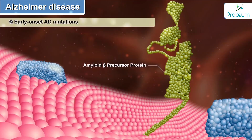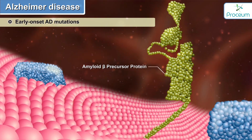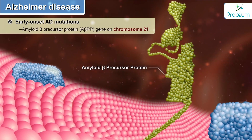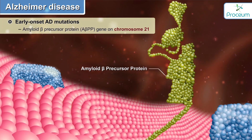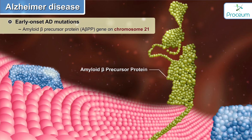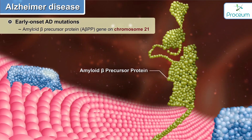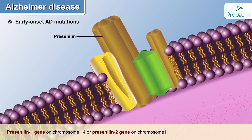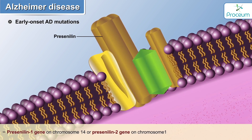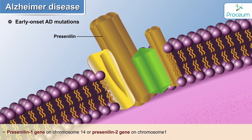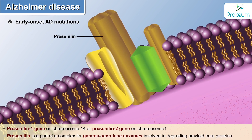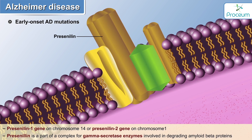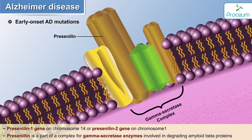Early onset Alzheimer's disease is seen due to mutations in the beta amyloid precursor protein gene, which is located on chromosome 21, or due to presenilin type 2 gene on chromosome 1. Presenilin is part of a complex for gamma secretase enzymes which are involved in degrading amyloid beta proteins.